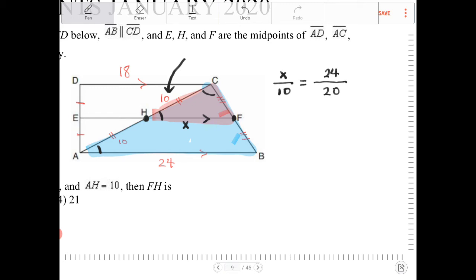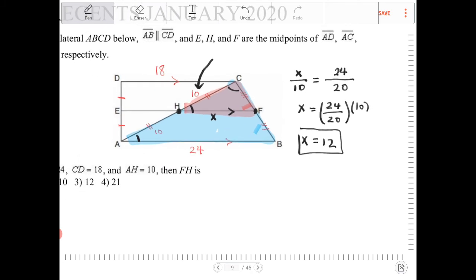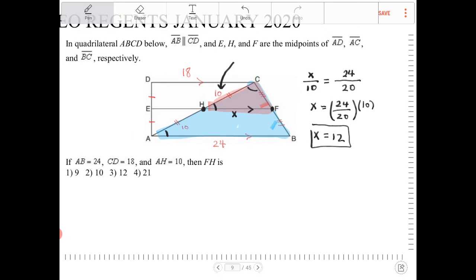So what is X going to equal to then as a result? Well, that's just, if I multiply both sides by 10, I end up with 24 over 20 times 10. Well, 10 and 20, they become 2. So I end up with 12 as a result. So HF is going to be a length of 12.